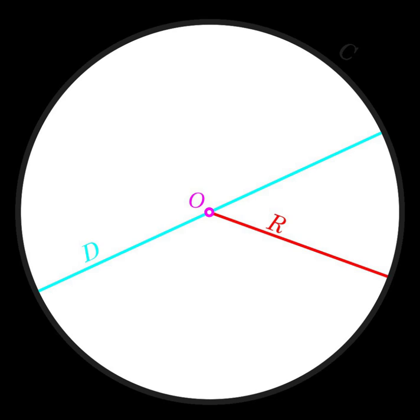Circumference is used by some authors to denote the perimeter of an ellipse. There is no general formula for the circumference of an ellipse in terms of the semi-major and semi-minor axes of the ellipse that uses only elementary functions. However, there are approximate formulas in terms of these parameters. One such approximation, due to Euler, for the canonical ellipse.